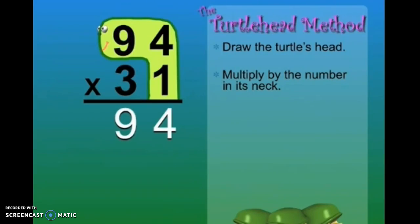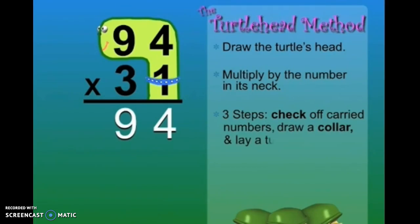There are three important steps before we move on. Check off carried numbers. We don't have any this time. Draw a collar and lay a turtle egg.